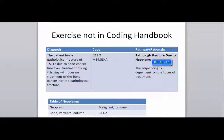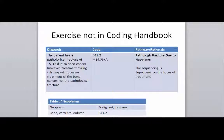Here's another example — the same scenario, however this time the focus is on the bone cancer, not the fracture. So all we do is invert our codes. Now our cancer diagnosis is the primary code and the vertebral fracture code, M84.58, is the secondary code in this case.